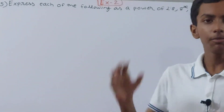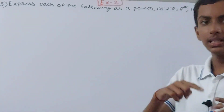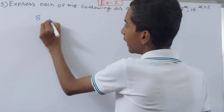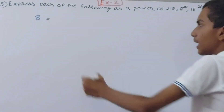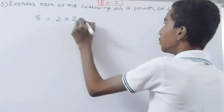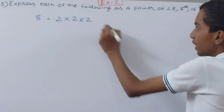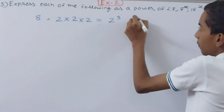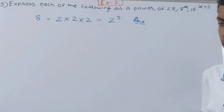That means we have to write them with base 2 and some exponent. First we have 8. To express 8 as a power of 2, I will write it as 2 × 2 × 2: 2 × 2 is 4, and 4 × 2 is 8. That is 2 to the power 3. So for 8, the answer is 2³, where the base is 2.